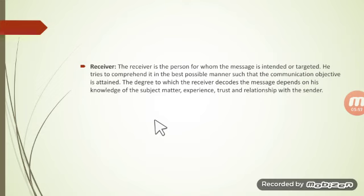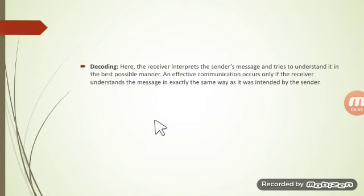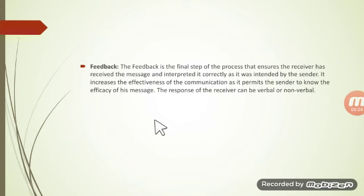The receiver is the person who receives the message from the sender. Decoding is the technical term used to describe how the receiver understands the message from the sender. The receiver interprets the sender's message and tries to understand it in the best possible manner — this is decoding.